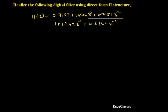H(z) has been given with a transfer function equal to this. If you look closely, it is already in the reduced form, so we do not have to do anything for this and we can draw the structure straight away. I will show you how to draw the structure without writing any equations.